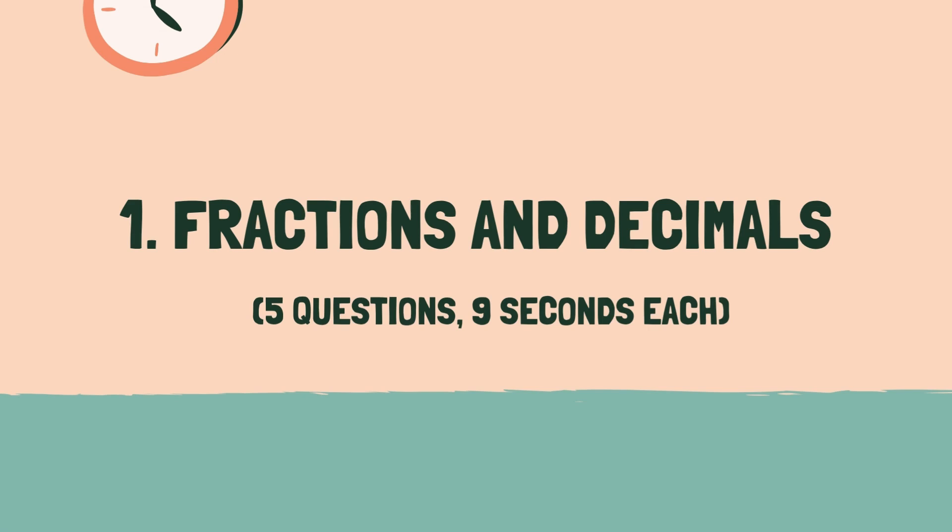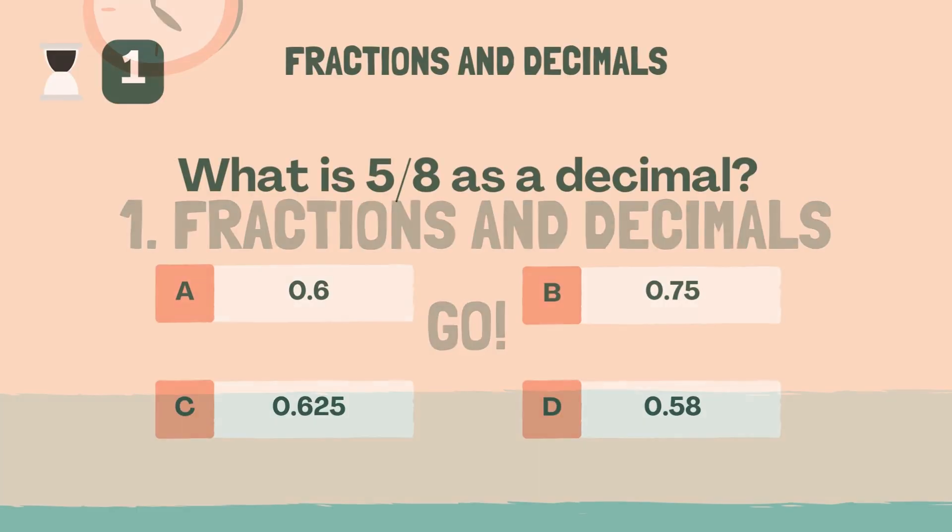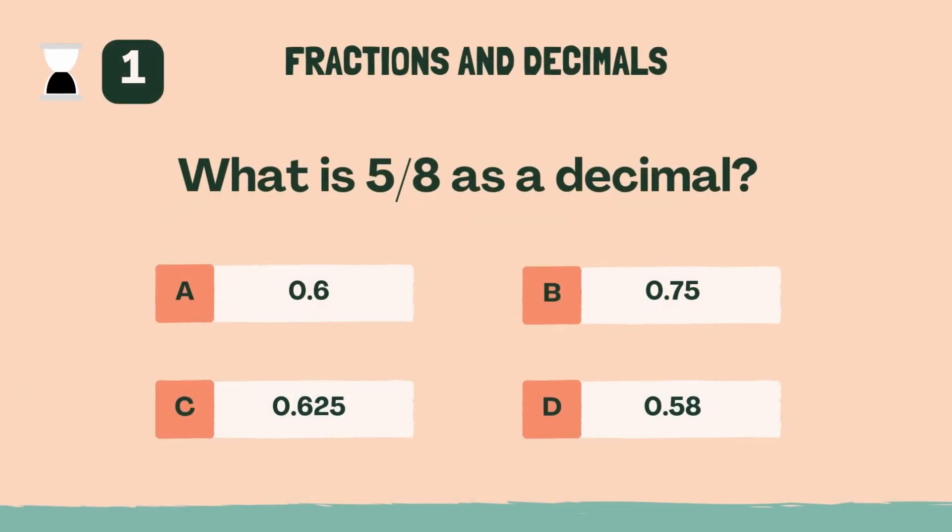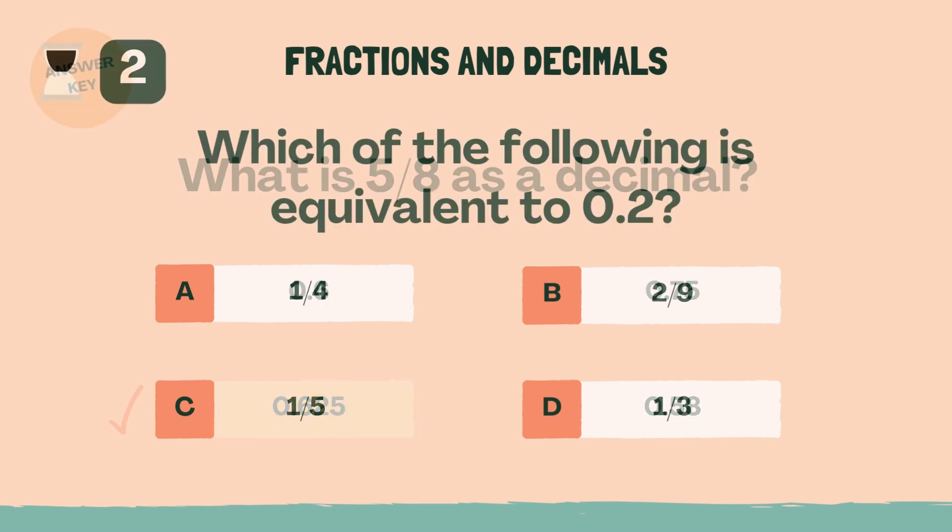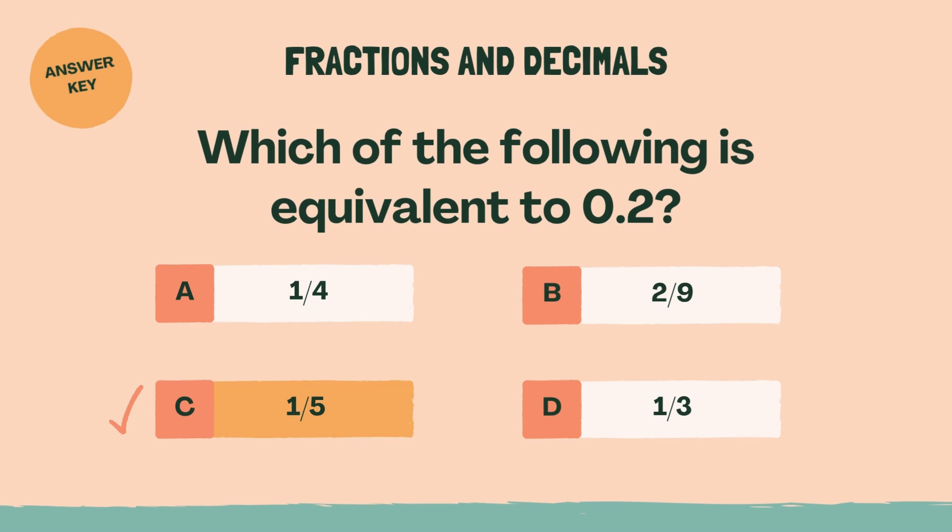Category 1, fractions and decimals. Three, two, one, go. What is five-eighths as a decimal? C, 0.625. Which of the following is equivalent to 0.2? C, one-fifth.